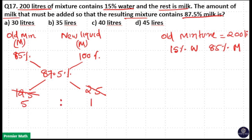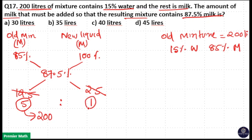The ratio is 5:1. Be careful here — do not add these parts together. The 5 parts represents the old mixture itself. The 1 part represents the new liquid — pure milk — that you are adding. So 5 parts equals the old mixture, which is 200 liters.